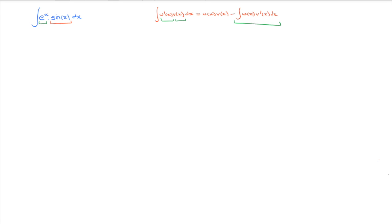The trick behind recursive integration by parts is to name this integral — we give it a name, typically I. Upon successive integration by parts, the second integral inside our formula will look like some scalar multiple of I. We'll end up with something like I equals u times v plus or minus alpha times I, then rearrange and solve for I. Let's illustrate this with a four-step method.